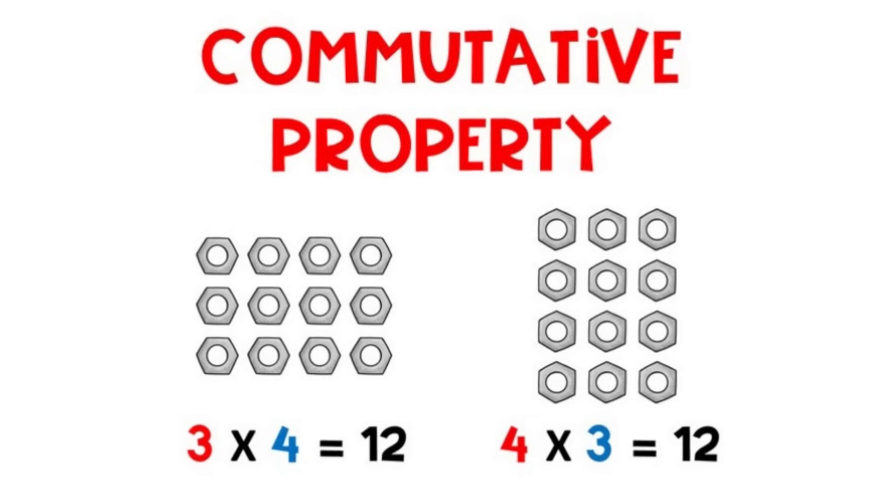The commutative property of multiplication. The commutative property says that you can change the order of the factors and still get the same product.